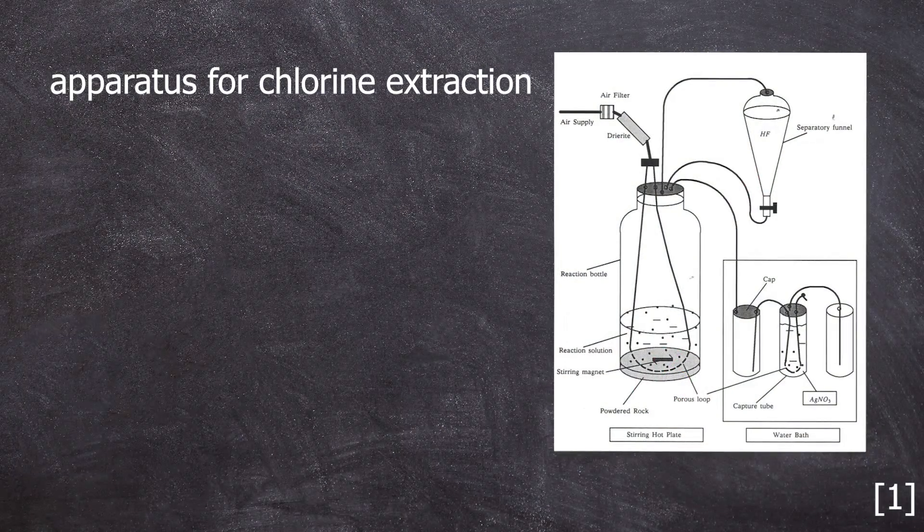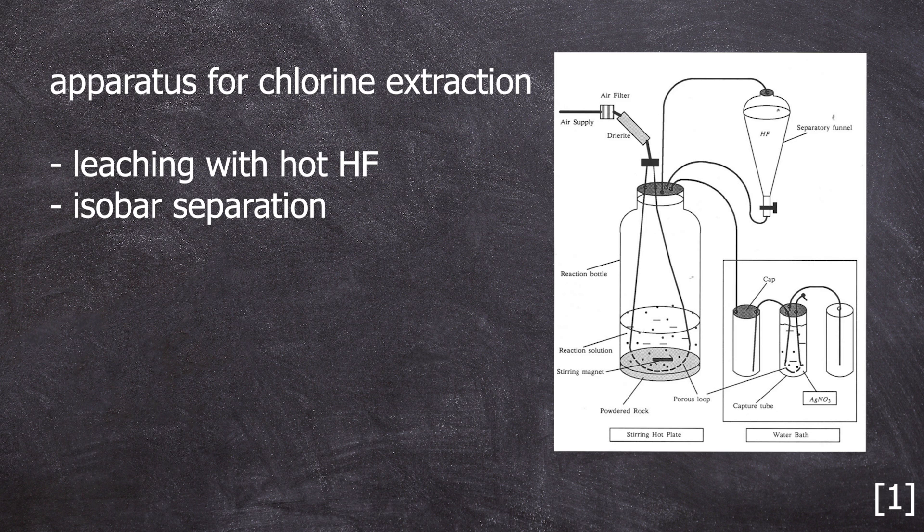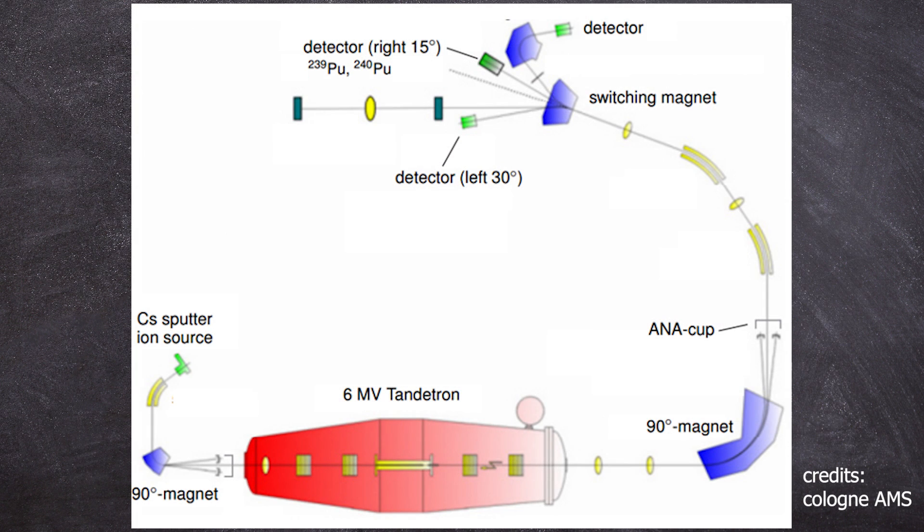Now that meteoric Chlorine-36 has been removed, there is still one last step before measuring with the AMS. AMS primarily detects masses, and other nuclides with the mass of 36 would interfere.